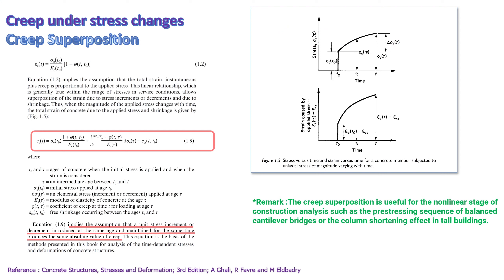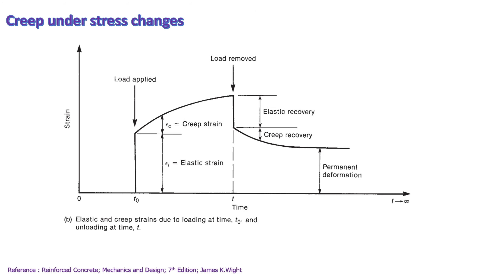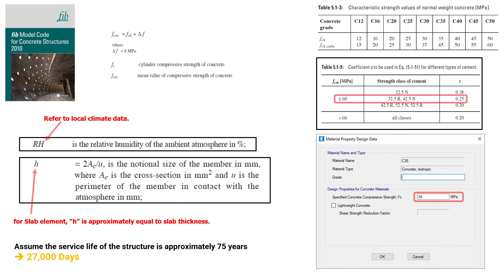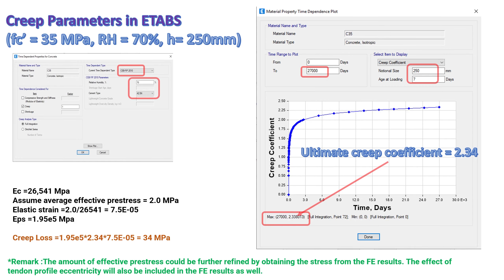The creep superposition is useful for nonlinear stage of construction analysis such as the pre-stressing sequence of balanced cantilever bridges or the long-term column shortening effect in tall buildings. This picture demonstrates creep behavior under stress changes according to the assumption mentioned earlier. The ETABS parameters for creep calculation in this video refer to the Model Code for Concrete Structure 2010 by FIB CEBFIP. The strength class of cement, relative humidity, and notional size are shown here. An example for creep loss calculation for concrete strength of 35 MPa with 70% relative humidity and 250 mm notional size is shown here.